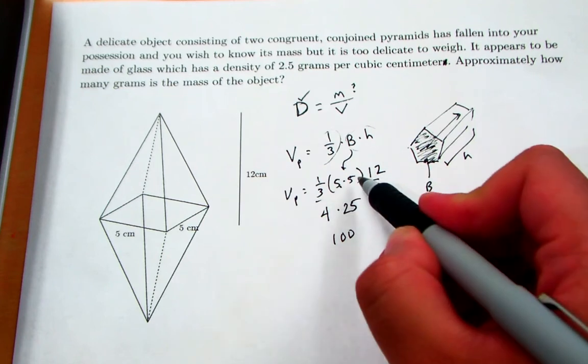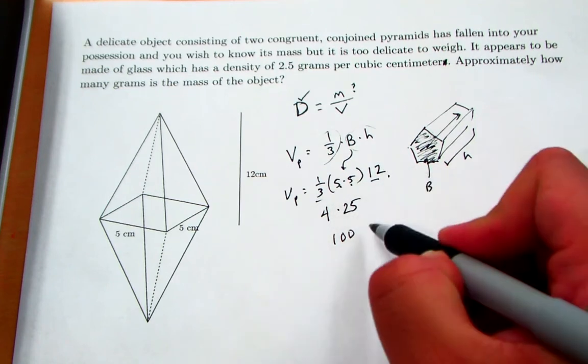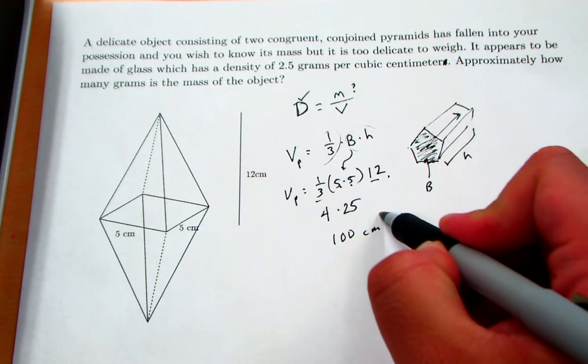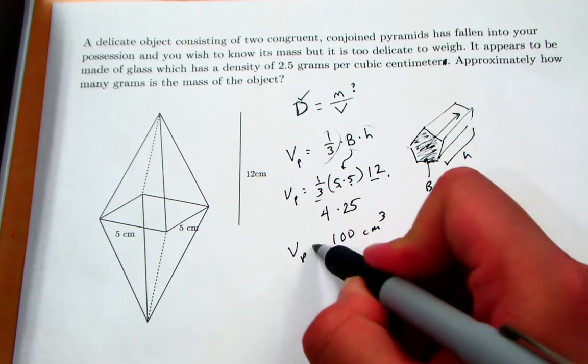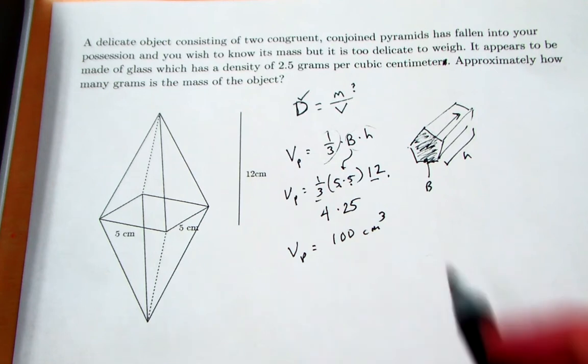Four times 25 is 100. All of my measurements, this is five centimeters, this is five centimeters, this is 12 centimeters, so I have three centimeters, or centimeters cubed you might say. So that's the volume of one of my pyramids, 100 cubic centimeters.